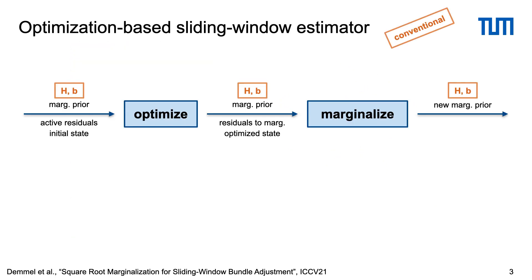The sliding window estimator executes two important steps whenever new image frames are added. First, the initial state is optimized using the active residuals and the current marginalization prior.